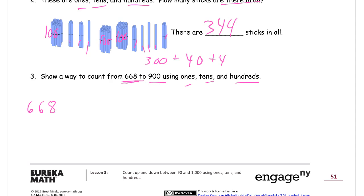I'm going to count up by ones and then by tens and then hundreds. So 668, 669, 670. Now I can count by tens because I have a 10 in that 70 there: 680, 690, 700. Now I can count by hundreds. I'm going to 900: 700, 800, 900. There, I used ones, tens, and hundreds.